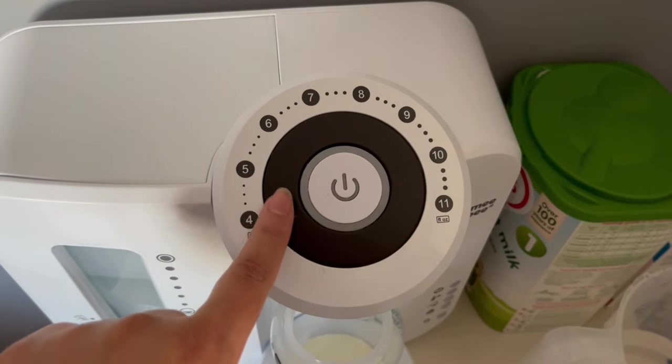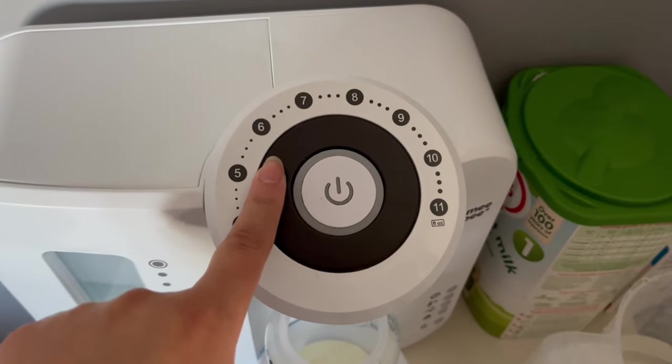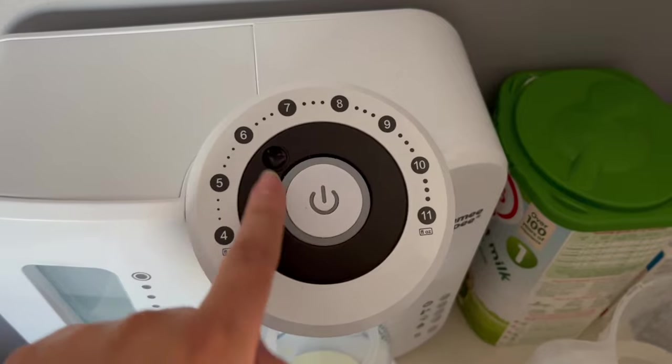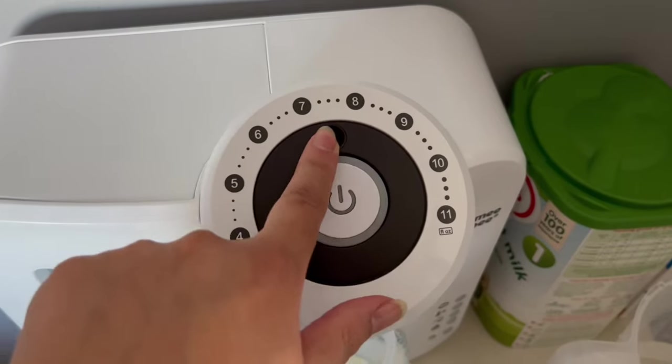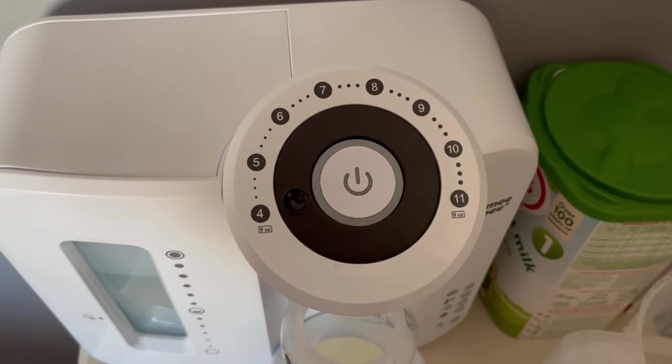You can use the dial at the top here to choose the amount of formula that you want to make, and you just need to push the little indented bit to 5, 6, 7, 8 depending on how many ounces you want to make. For this one we are going to make a 4 ounce bottle.